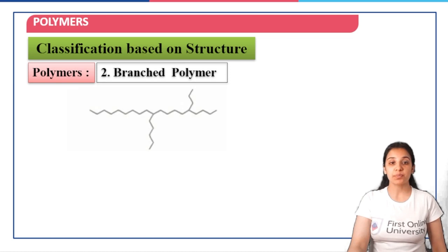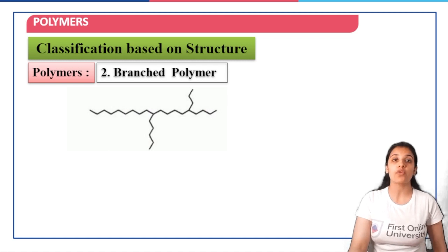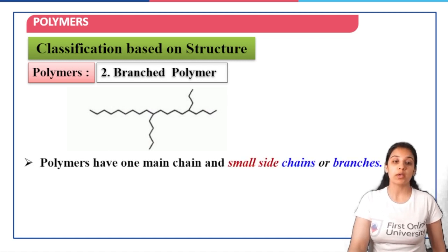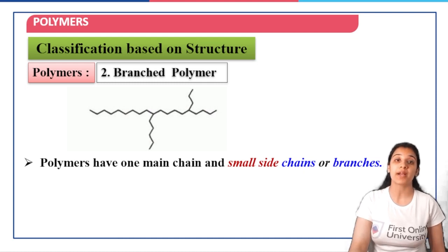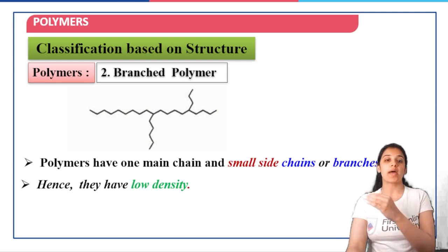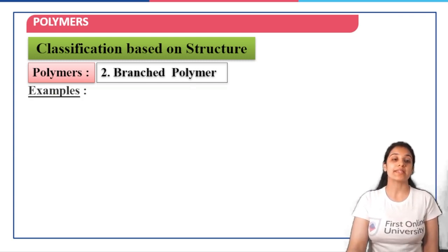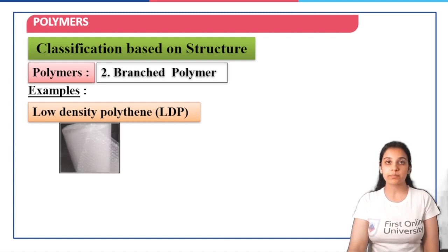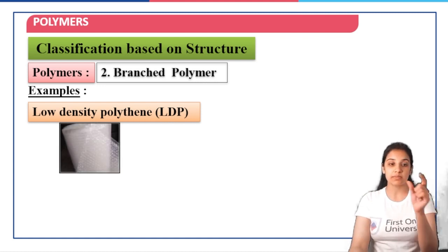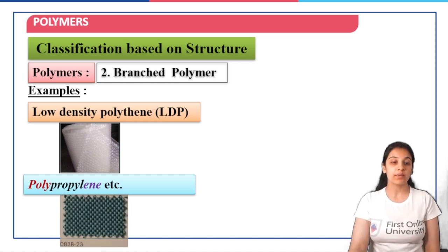Then we have branched polymers. As you can see in the picture, these are the ones which have branches emerging out of the straight chains. Polymers have one main chain and small side chains or branches. They have low density. For example, low-density polythene (LDP) which is used in making packaging polythenes. Then we have polypropylene.